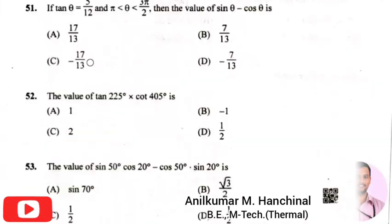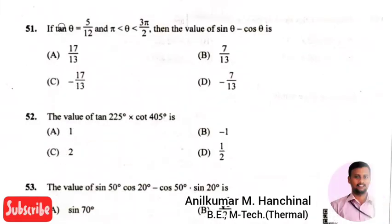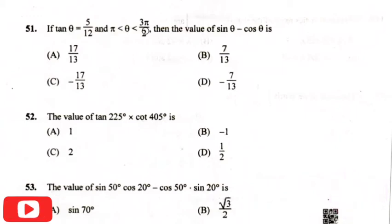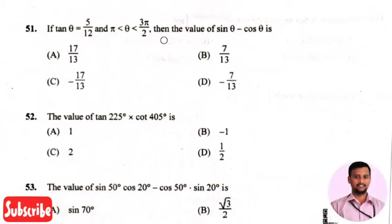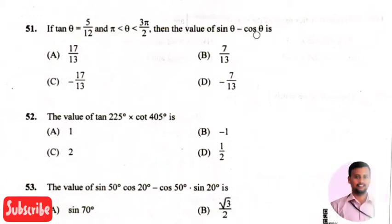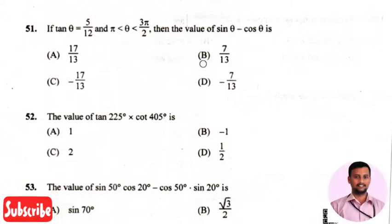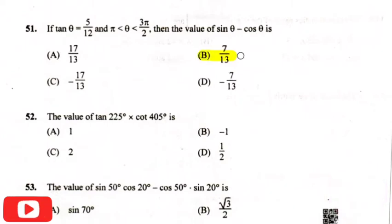The next question is: if tan theta equals five by twelve and theta lies between pi and three pi by two, then the value of sine theta minus cos theta is — the right answer is option two, that is seven by thirteen.